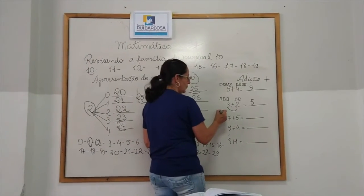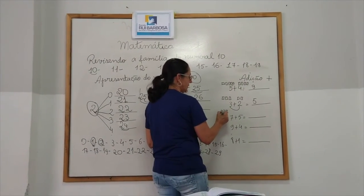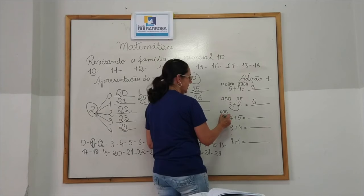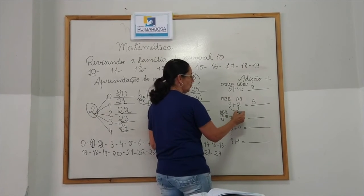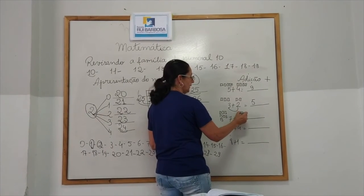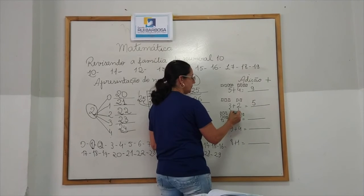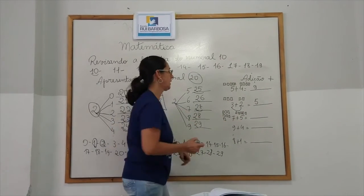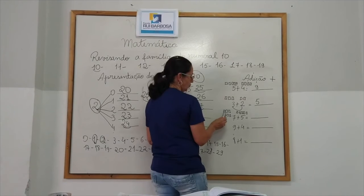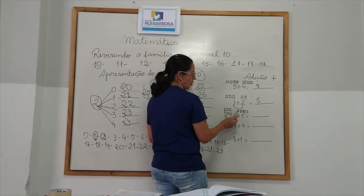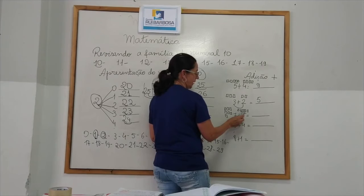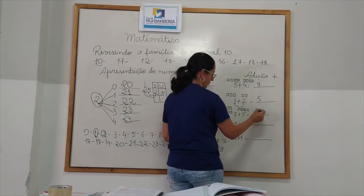7. 1, 2, 3, 4, 5, 6, 7. Mais 5. 1, 2, 3, 4, 5. 7 mais 5 é igual a 1, 2, 3, 4, 5, 6, 7. 8, 9, 10, 11, 12.